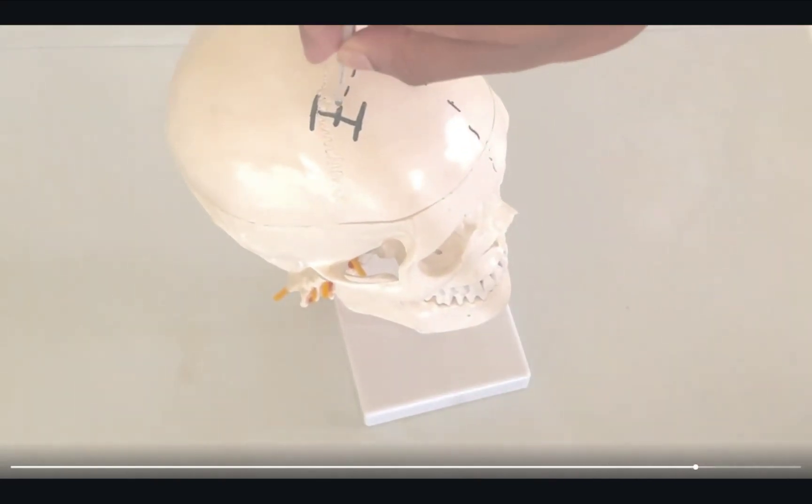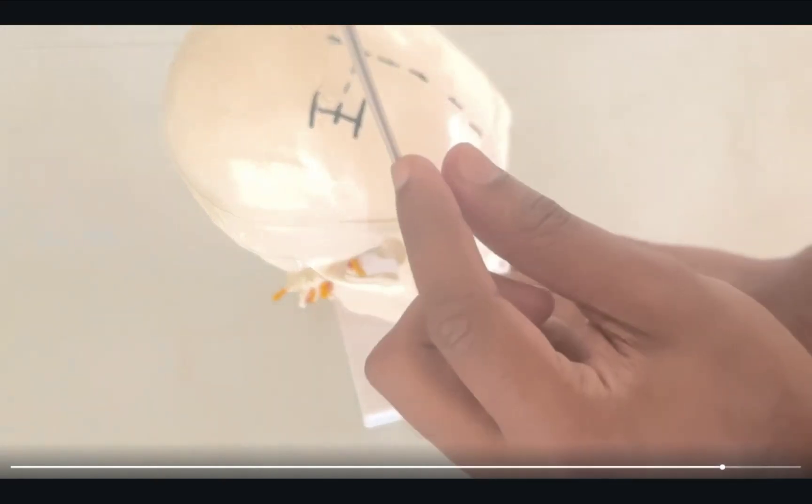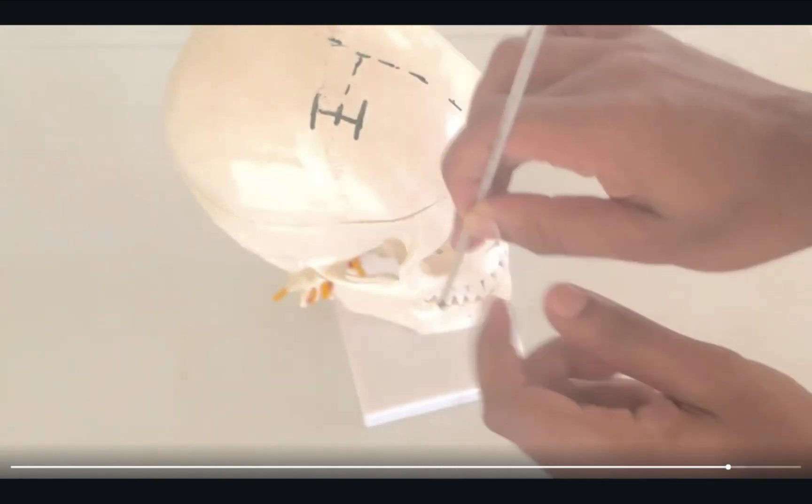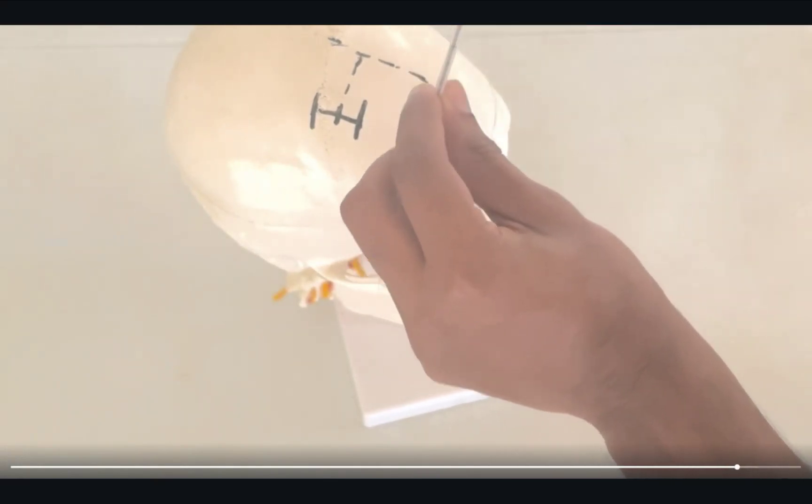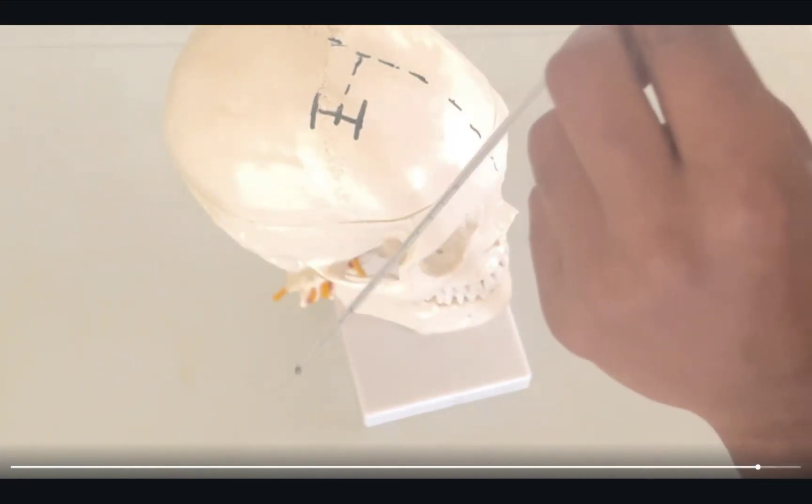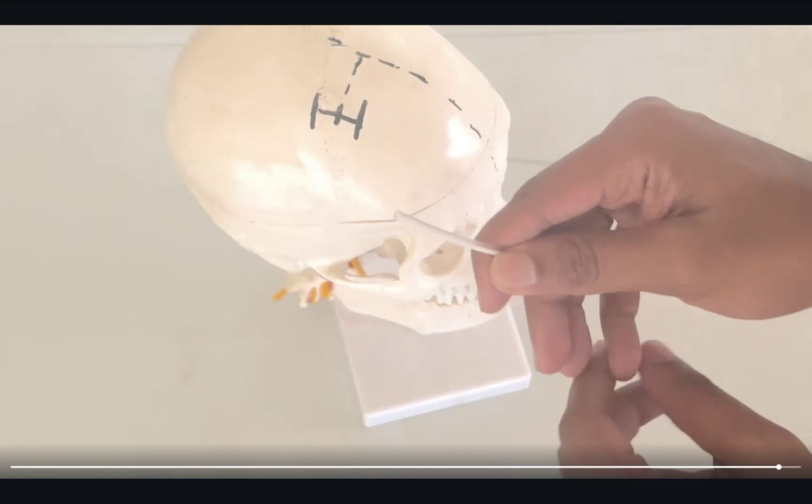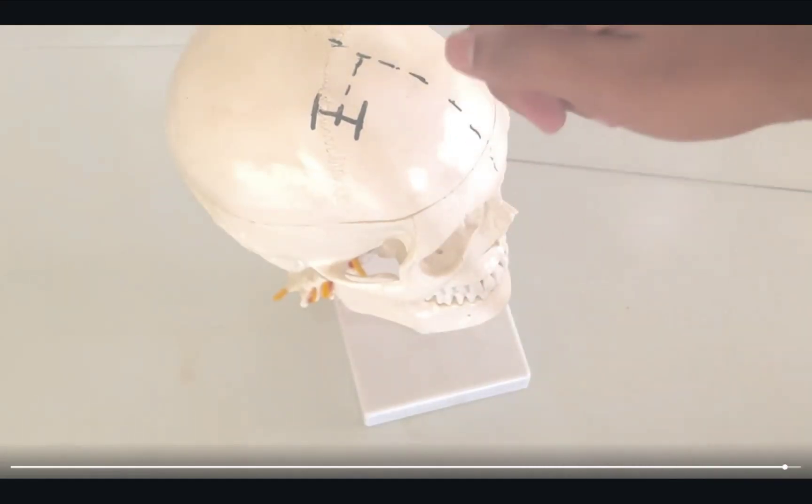You would make sure that your EVD goes exactly perpendicular to the brain. Once you hit CSF and you can see the CSF flowing up the chamber, you can introduce the EVD one centimeter without the stylet. Then you can remove the stylet and the tube stays behind. You would then connect the end to a cap, tunnel it at the skin, and close the incision.